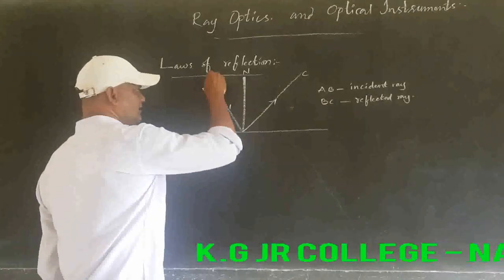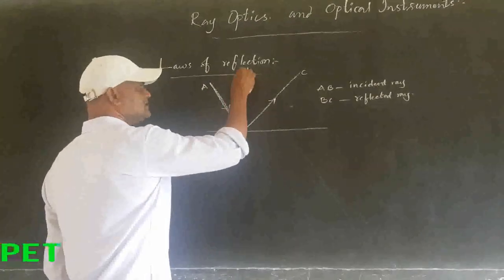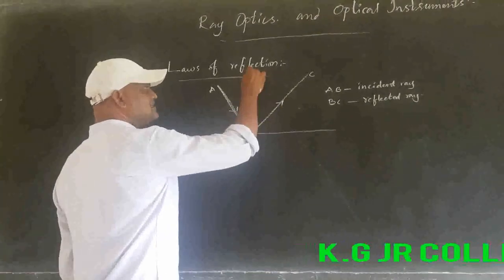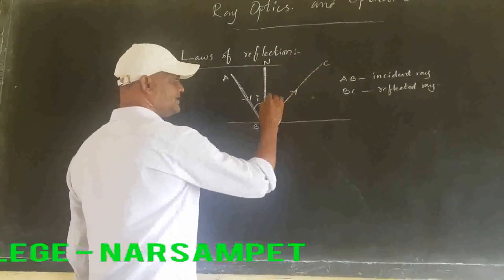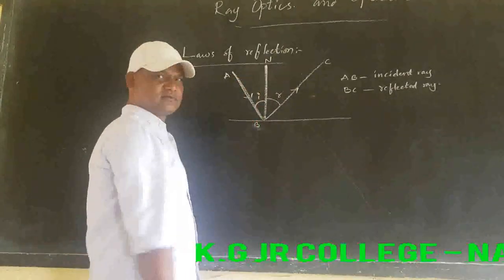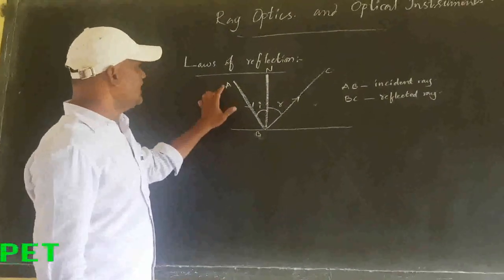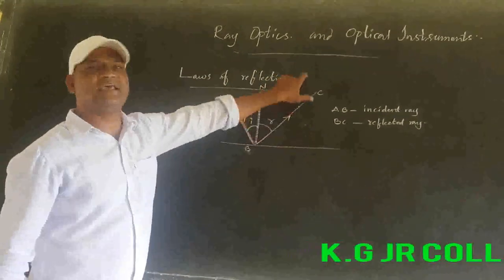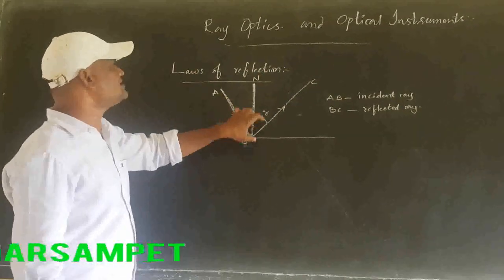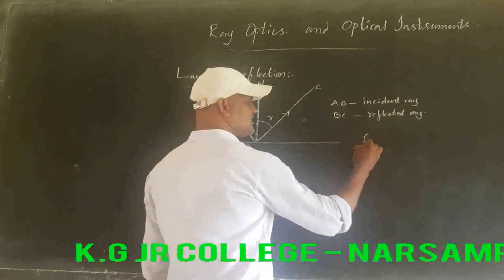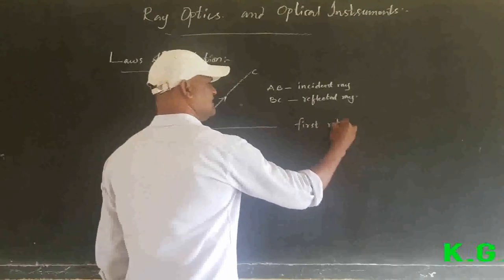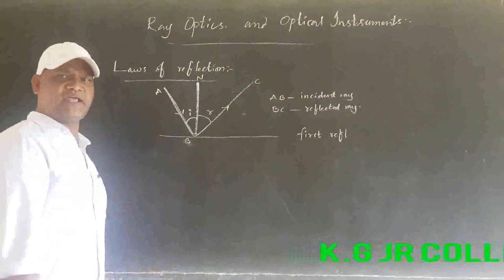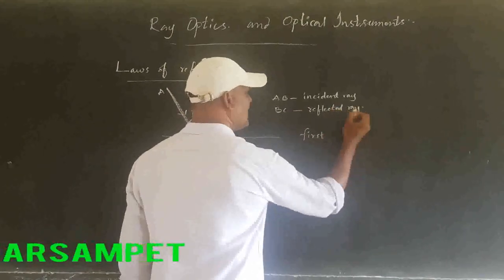The angle subtended by the incident ray and the surface normal is known as the angle of incidence. The angle subtended by the surface normal and the reflected ray is known as the angle of reflection. The incident ray, the normal, and the reflected ray all lie in the same plane. This is known as the first law of reflection.